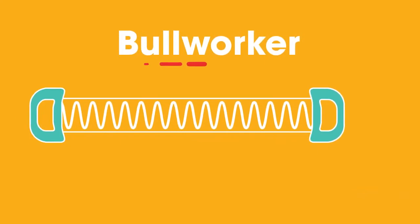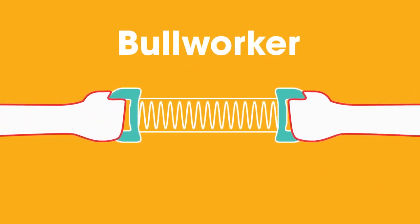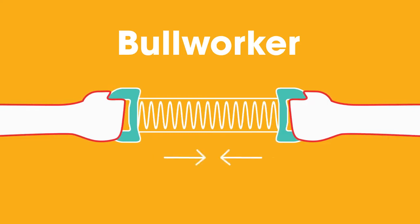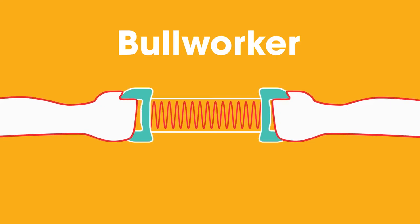This machine, called the bull worker, is used to exercise muscles. When the ends are pushed inwards, the spring inside is compressed. The bigger the force, the more the spring is compressed.